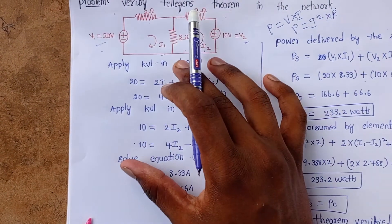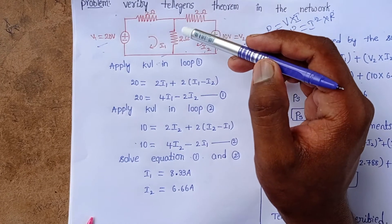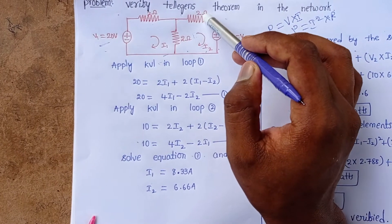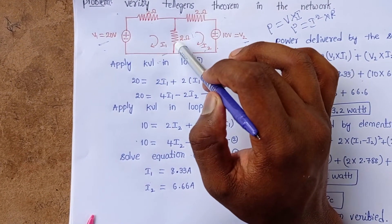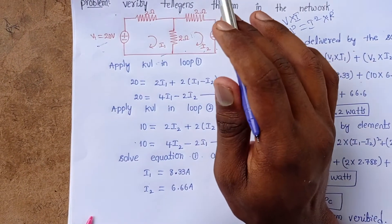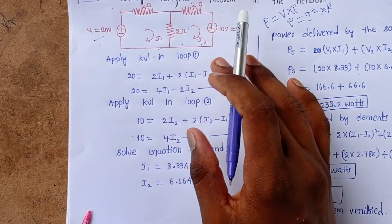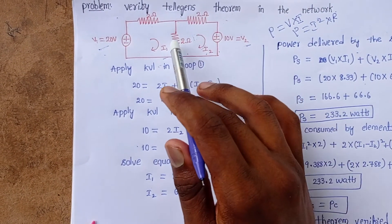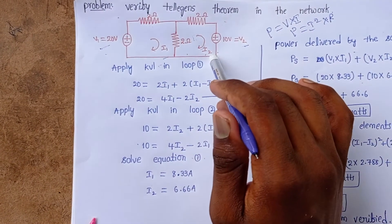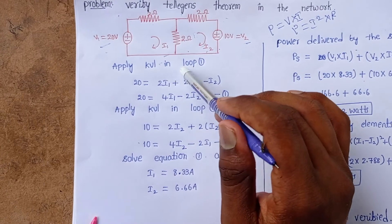We also need to find the power absorbed by each of the three resistor elements and add them to get total power absorbed. If power delivered by the source equals power absorbed by the elements, then Tellegen's theorem is satisfied. First, to find power we need I1 and I2 — apply KVL in loop one and loop two.